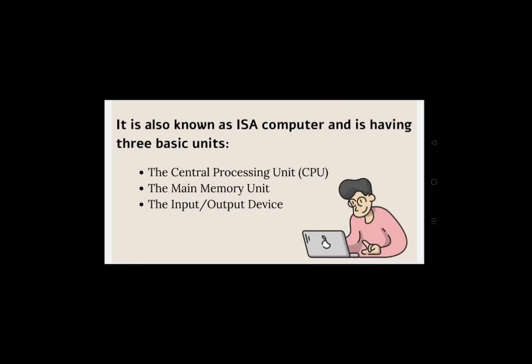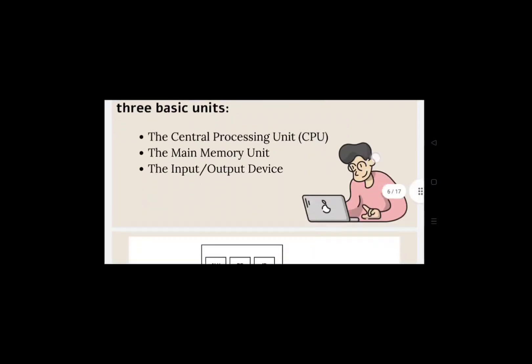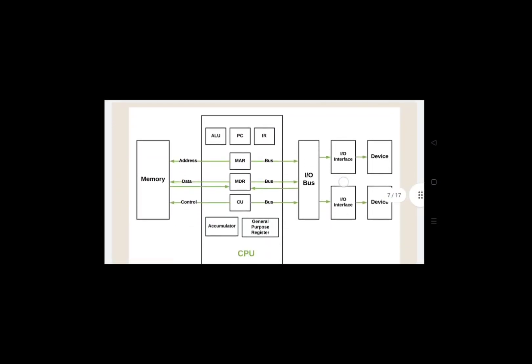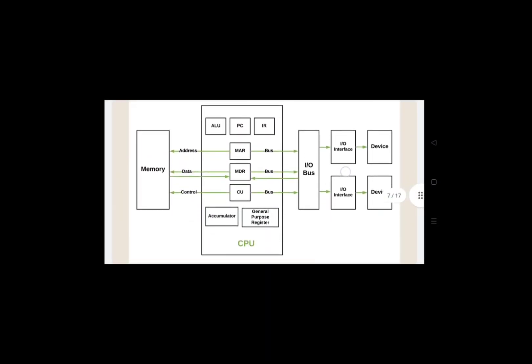The modern computer is also known as the ISA computer — Industry Standard Architecture computer. It has three basic units: the Central Processing Unit (CPU), the main memory unit, and the input/output devices, with which we are all familiar.